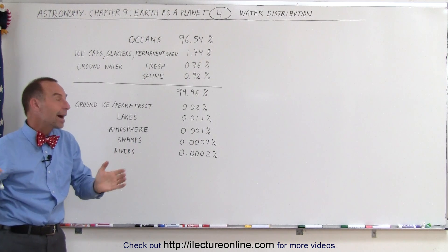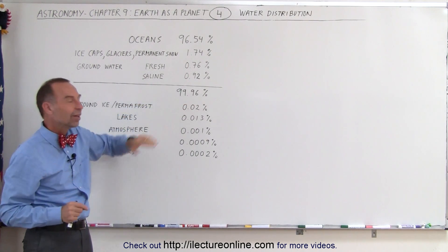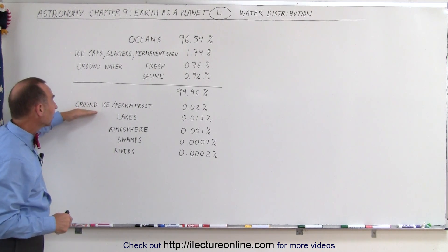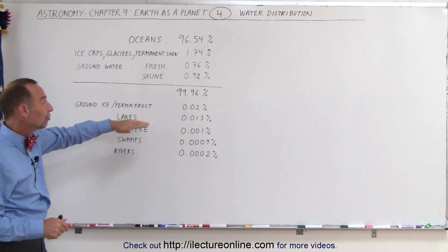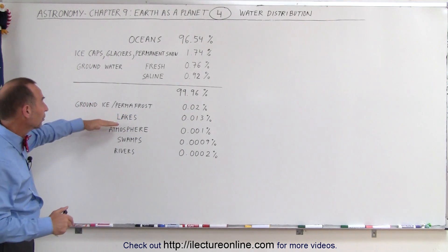That means all the other water combined makes up less than one percent, one tenth of one percent of the water. Now of that, ground ice and permafrost contains 0.02% of all the rest of the water available on the earth.